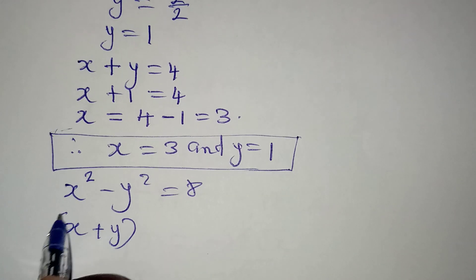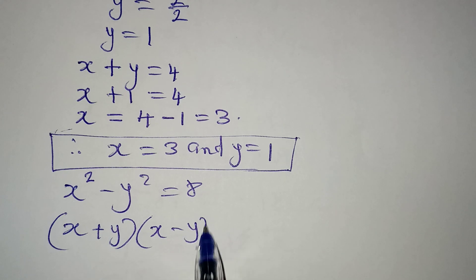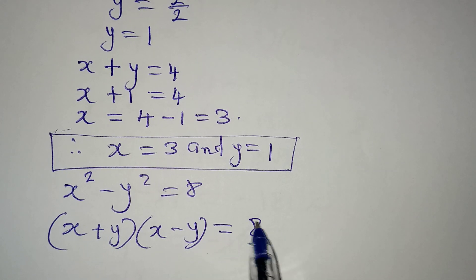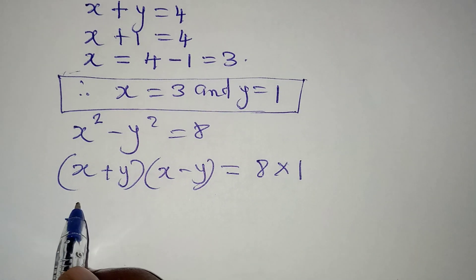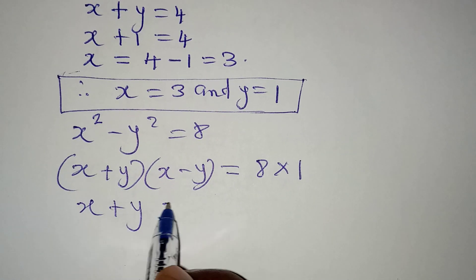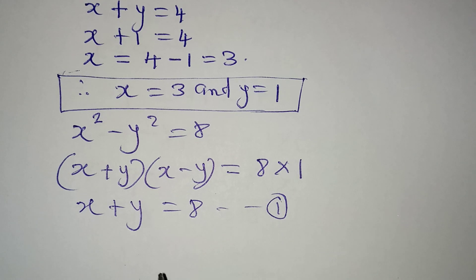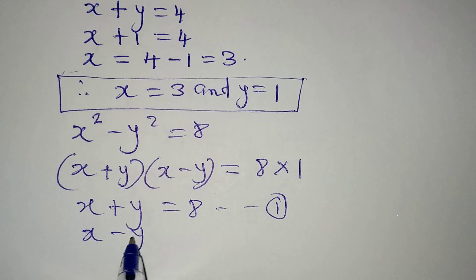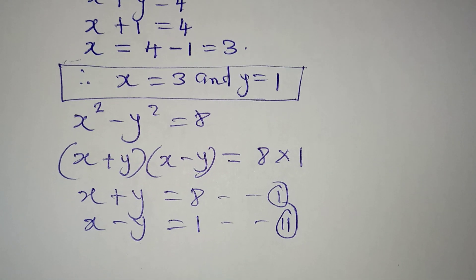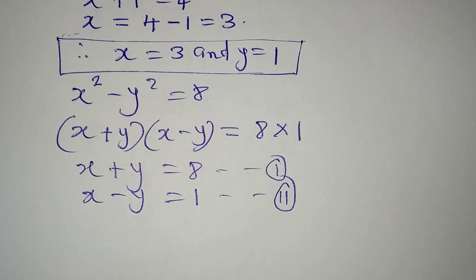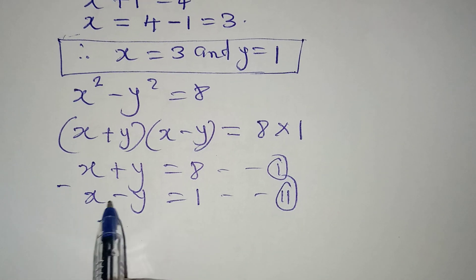We have x plus y into bracket x minus y, which equals eight times one. So x plus y equals eight becomes equation one, and x minus y equals one becomes equation two.